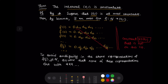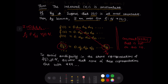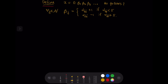Using Cantor's diagonalization process, we construct the number x as 0.β₁, β₂, β₃, ... We choose the digits βj in such a way that βj is not equal to αjj for all j in ℕ. It is clear that this number x is not on the list because if x equaled some f(j), then αjj would have to equal βj, but it does not. So let us define x equals 0.β₁, β₂, β₃, ... as follows.